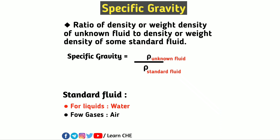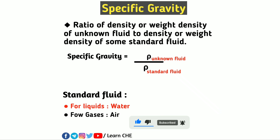In the case of water, the specific gravity is 1. Why? Because the unknown fluid has a density of 1000 kg per cubic meter and the standard fluid is also water, which also has a density of 1000 kg per cubic meter. And the specific gravity is a dimensionless number.